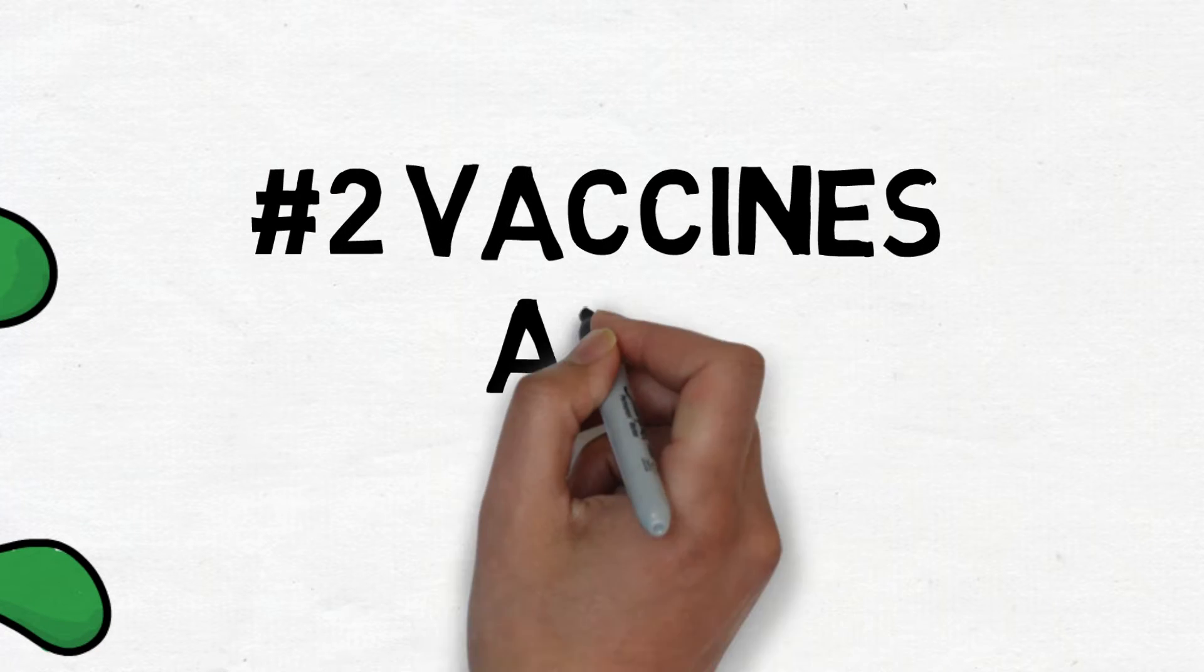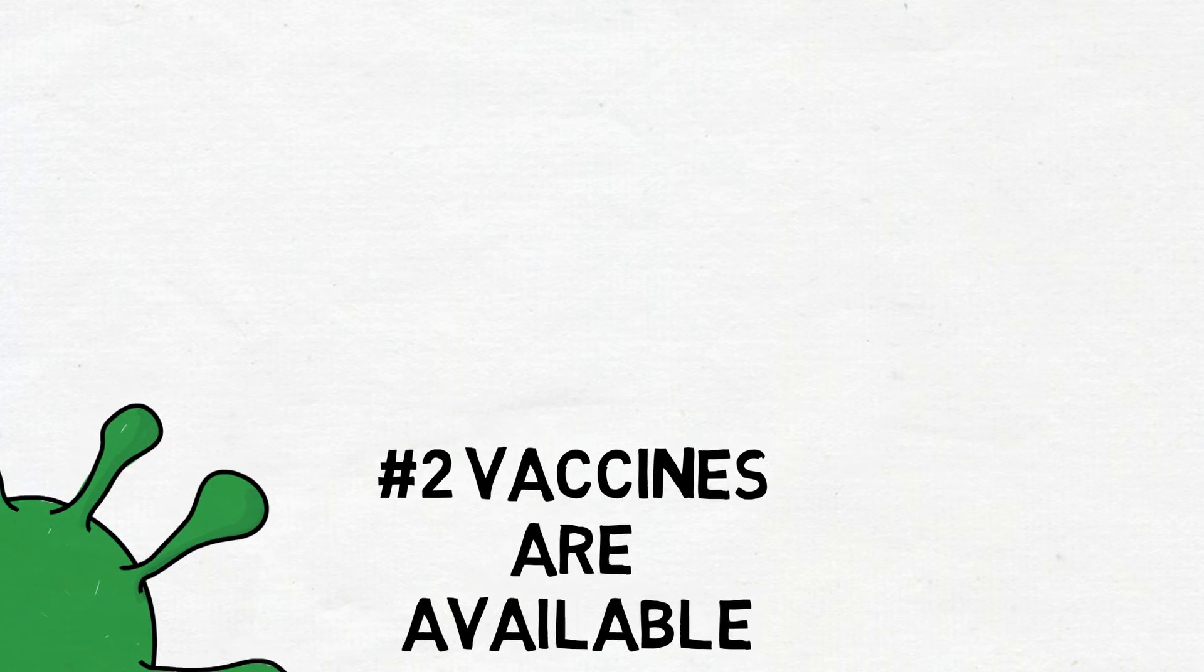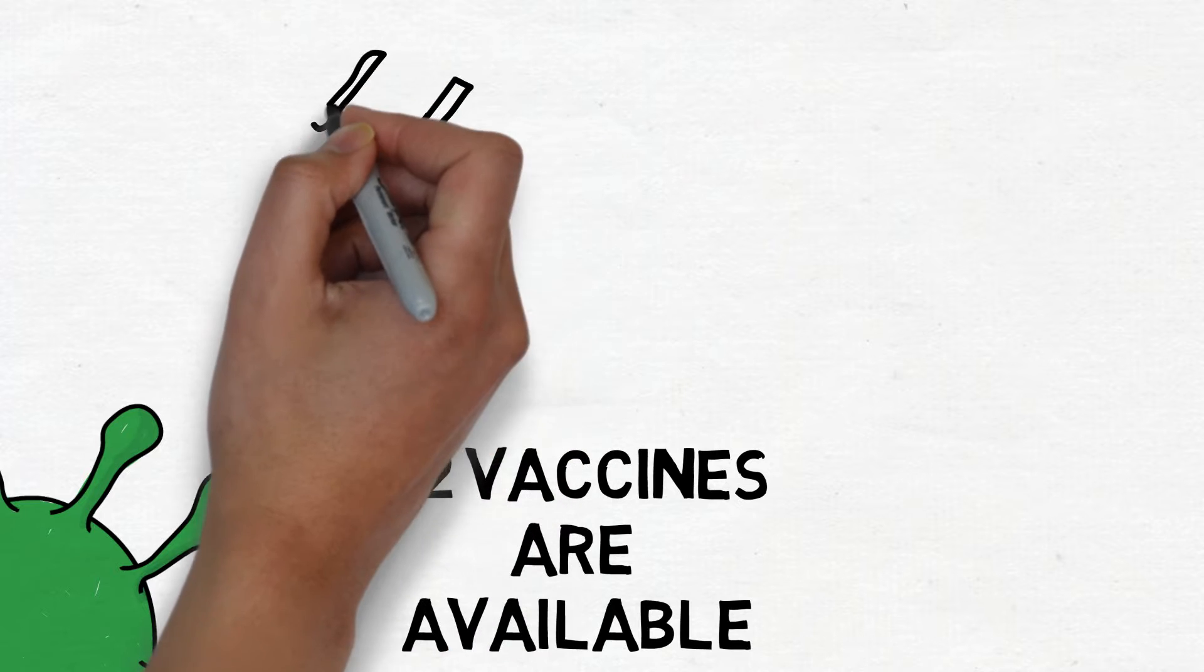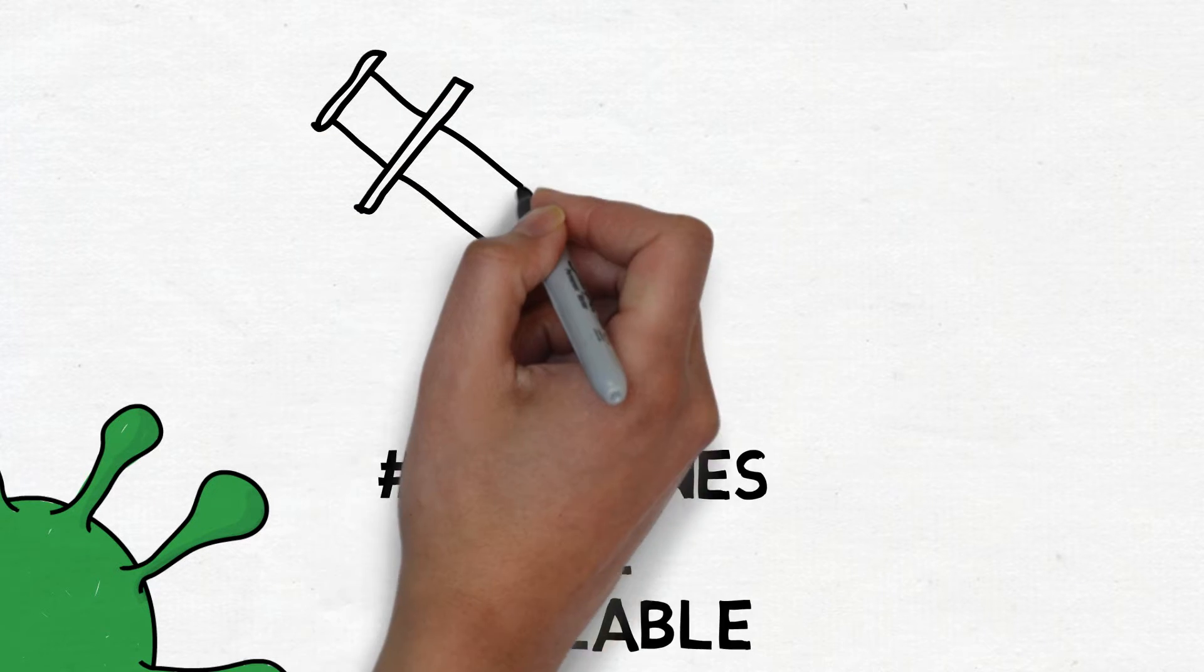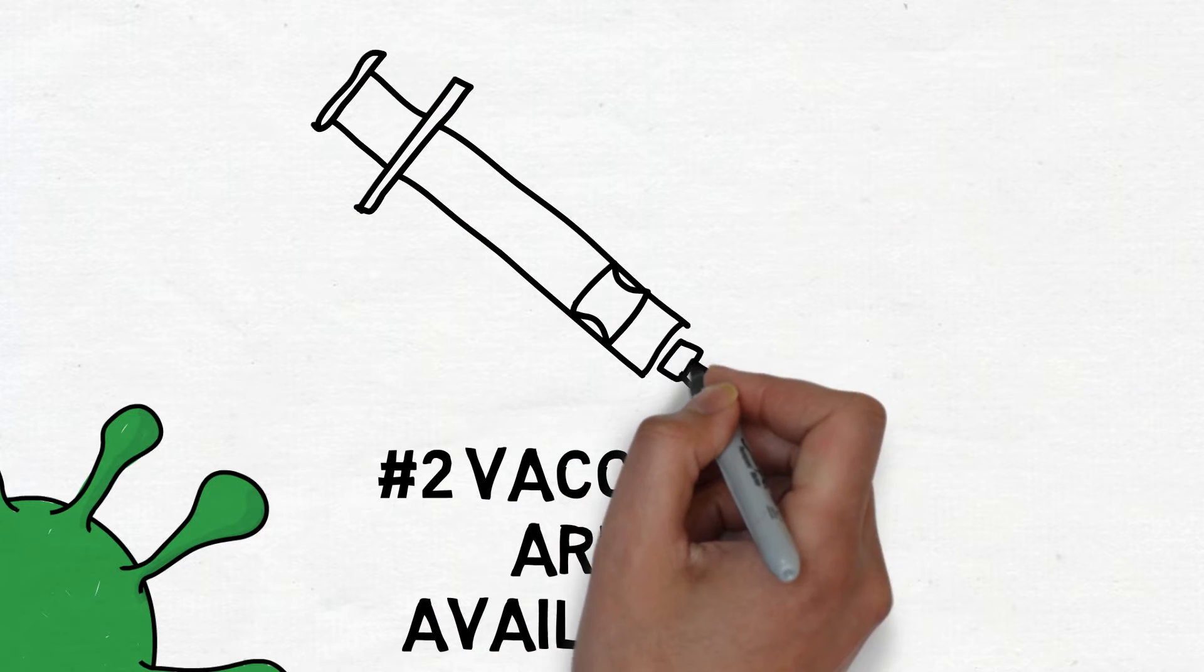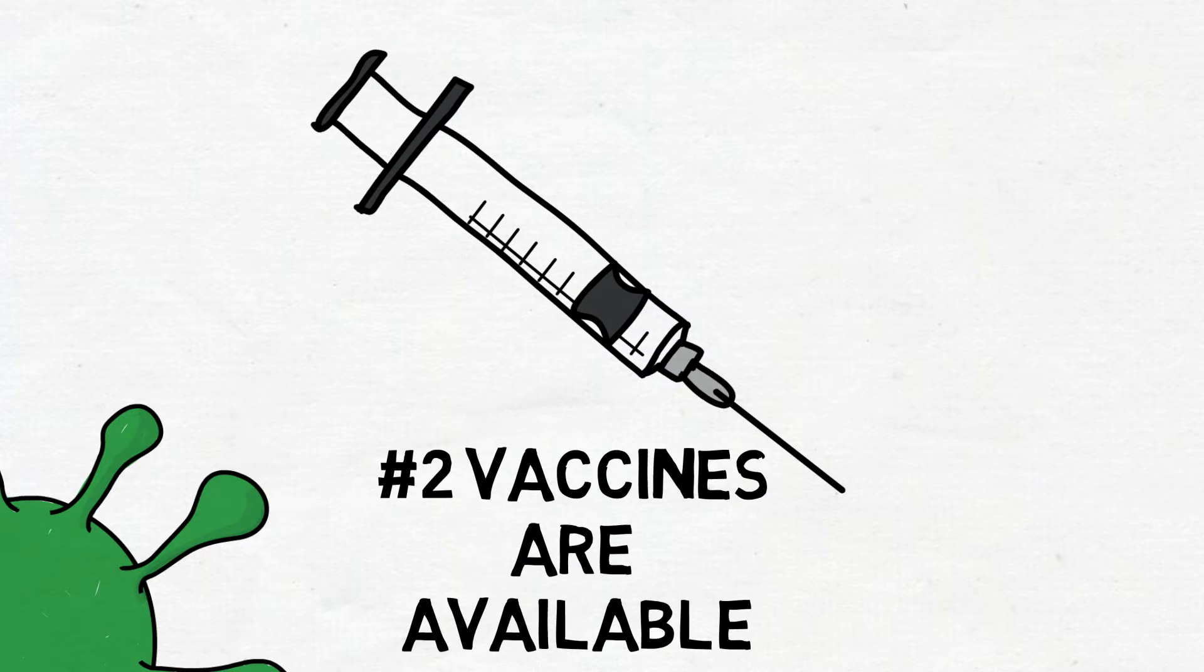Number two: Vaccines are available to aid against shingles. A shingles vaccine should only be administered to people who are 50 years old or older, possibly because that's the most common age range for someone to be diagnosed with shingles.